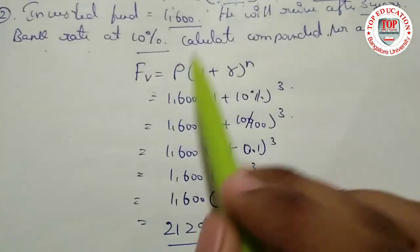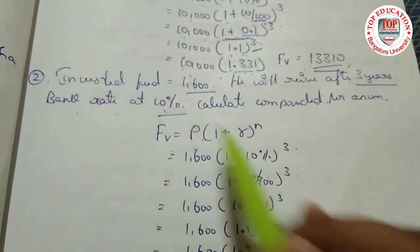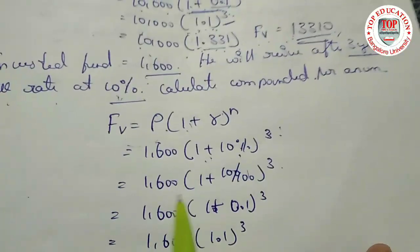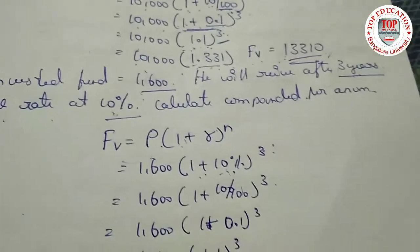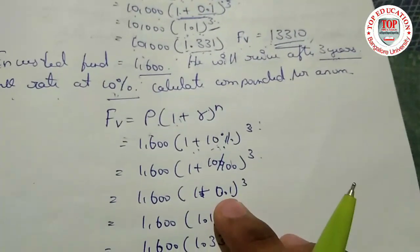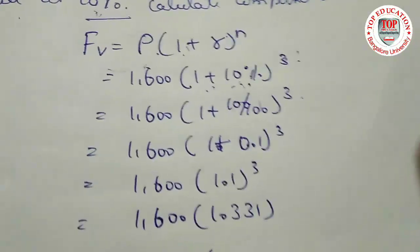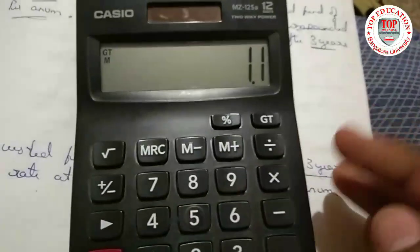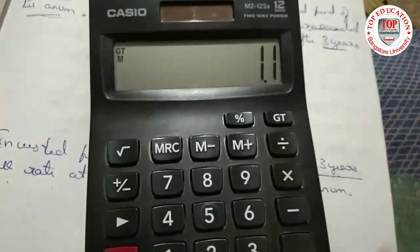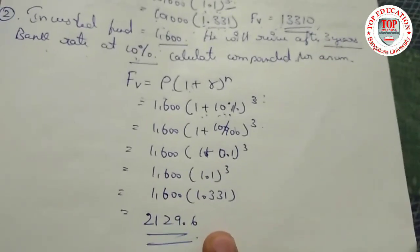We substitute: principal amount is 1,600. Keep 1 as it is. R is 10 percent. N is 3 years. Convert 10 percent to 10/100, which gives 0.1. So 1 + 0.1 = 1.1. Multiply 1.1 three times: 1.1 × 1.1 × 1.1 = 1.331. Multiply 1,600 by 1.331 to get the final answer. If you have any doubt, rewind the video.